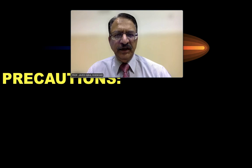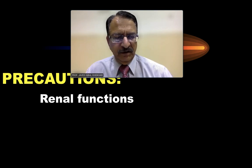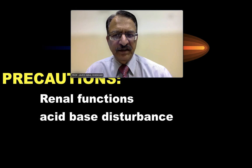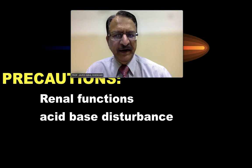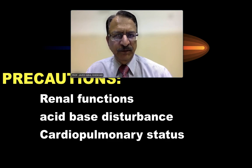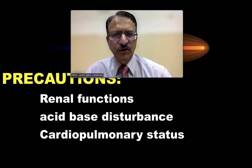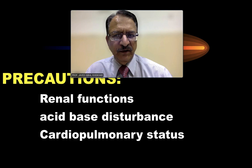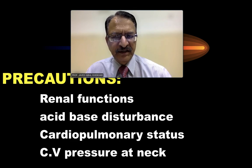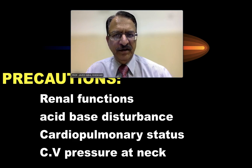The precautions in this technique are that first you must assess the renal functions, acid-base balance should be maintained, and the cardiopulmonary status should be assessed. Continuing with the forced diuresis, you also have to assess the renal function, the electrolyte and acid-base balance, the cardiopulmonary status, and the central venous pressure. These are the precautions which have to be maintained during the procedure.